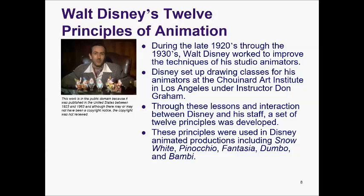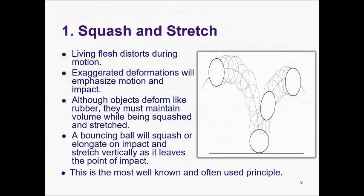Walt Disney's 12 principles of animation were developed during the late 1920s through the 1930s as Walt Disney worked to improve his studio animators' techniques. Disney set up drawing classes at the Chouinard Art Institute in Los Angeles under instructor Don Graham. Through these lessons and interaction between Disney and his staff, a set of 12 principles was developed, used in productions including Snow White, Pinocchio, Fantasia, Dumbo, and Bambi.